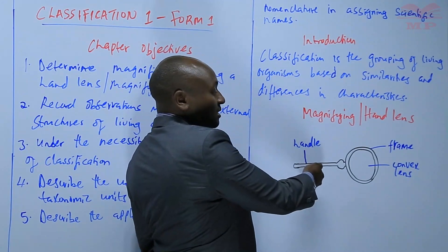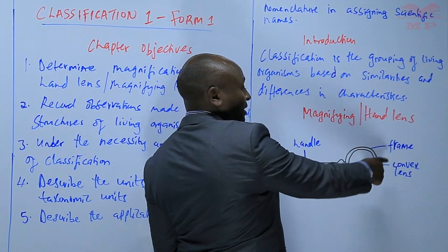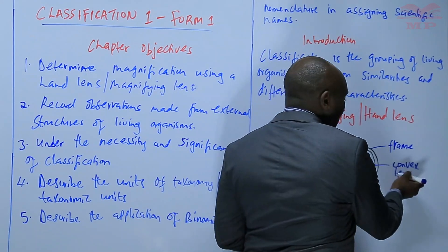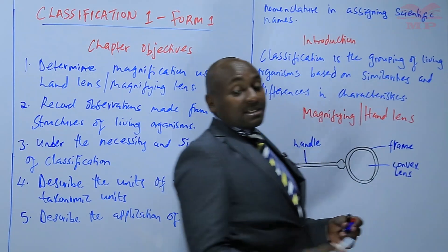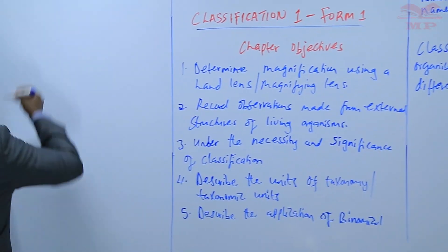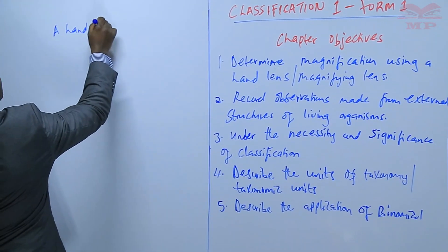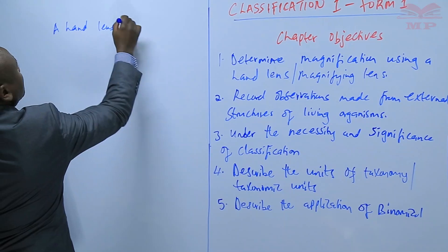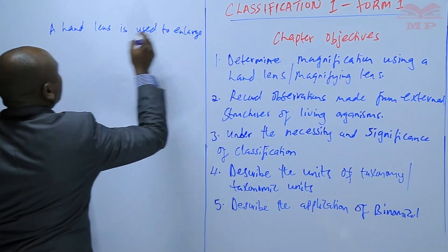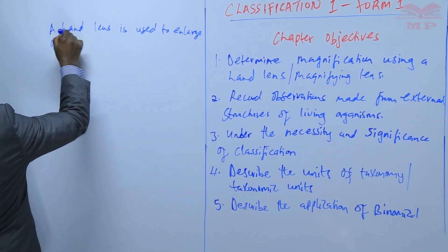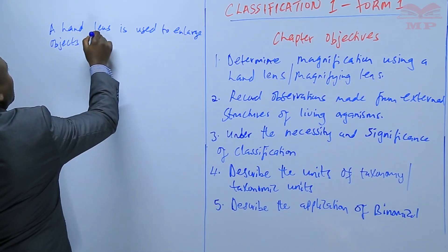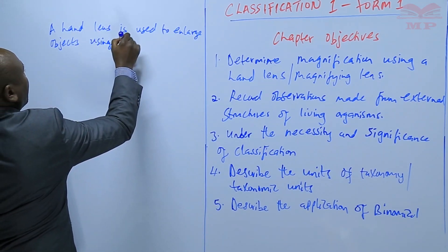There is a handle where one holds, then there is a frame that supports the convex lens, and this lens is the one that is used for magnification. We can say that a hand lens is used to enlarge objects using the lens.